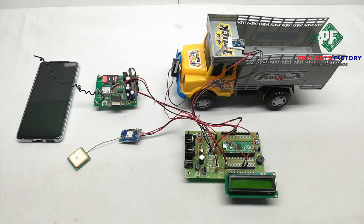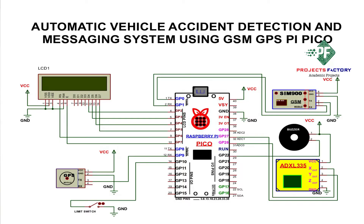Now we will see the circuit diagram. In this circuit diagram, the GSM module connects to GPIO 0 and 1. The GPS module connects to GPIO 8 and 9. The limit switch and buzzer connect to GPIO 10 and 22. And the MEMS sensor ADXL-335 connects to GPIO 26 and 27.